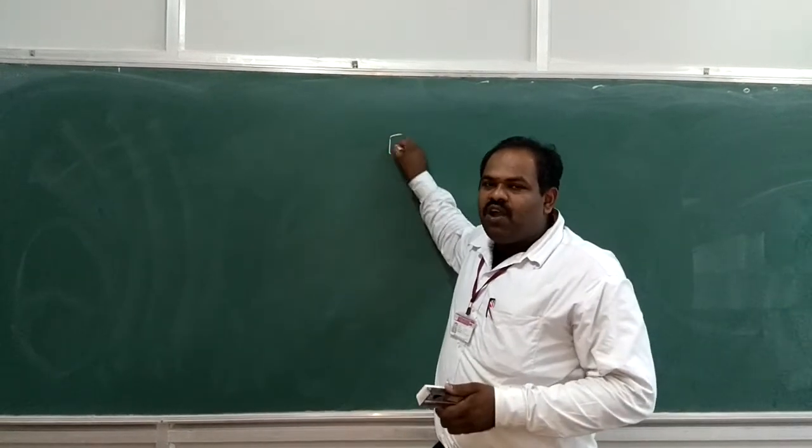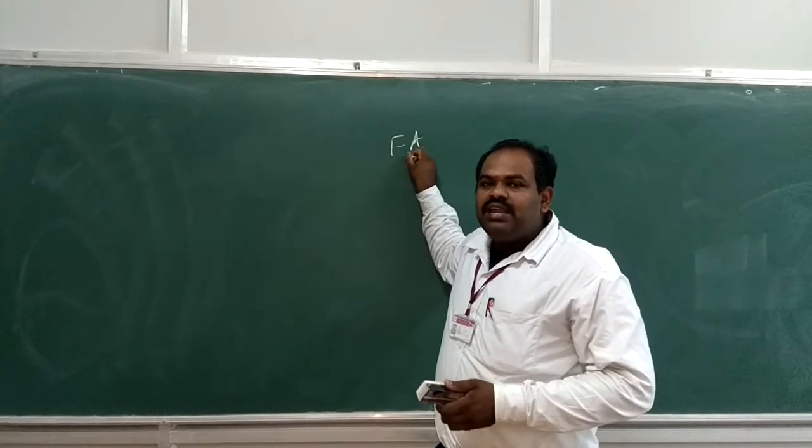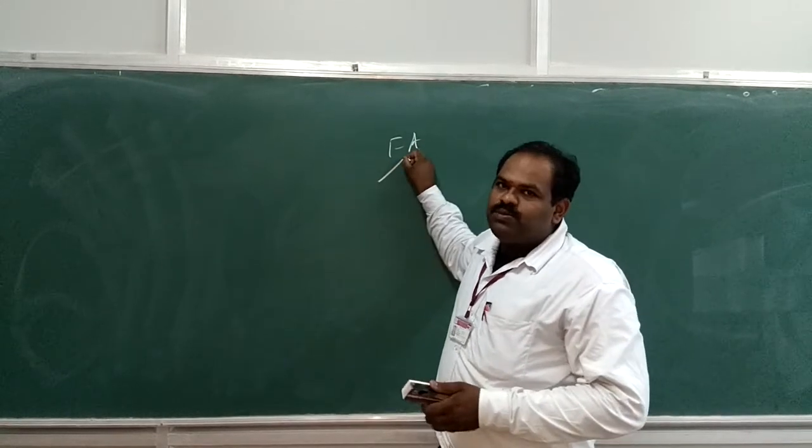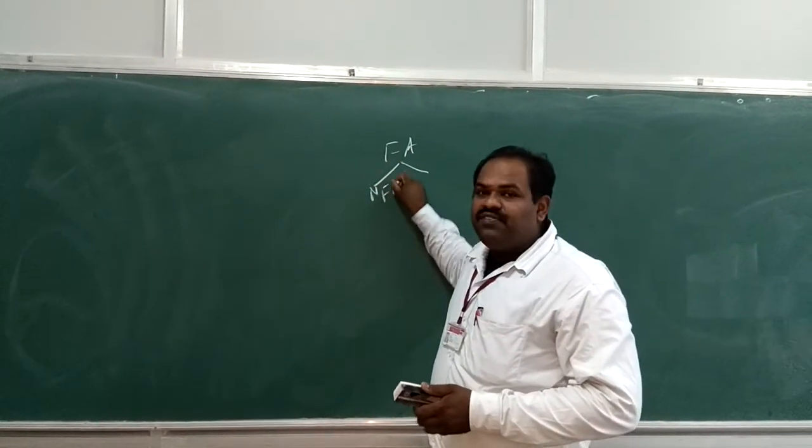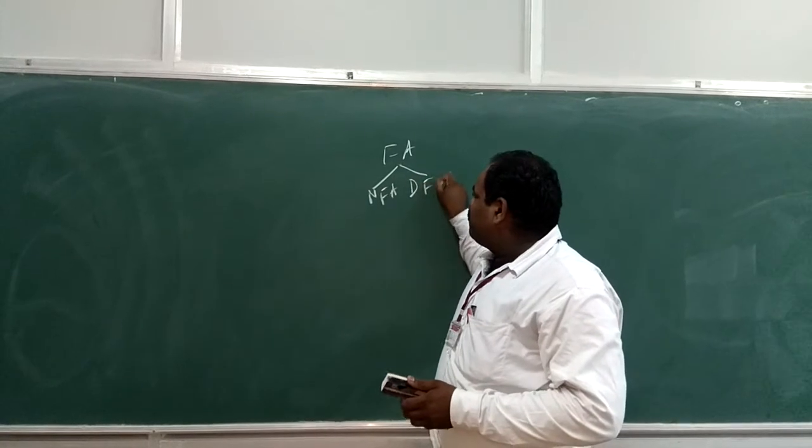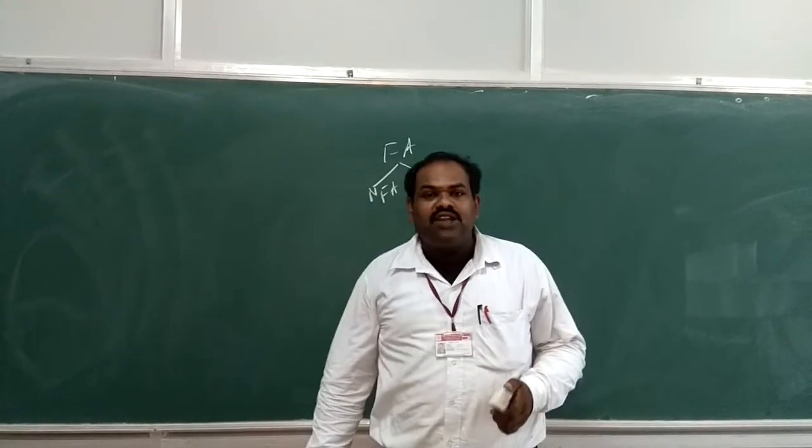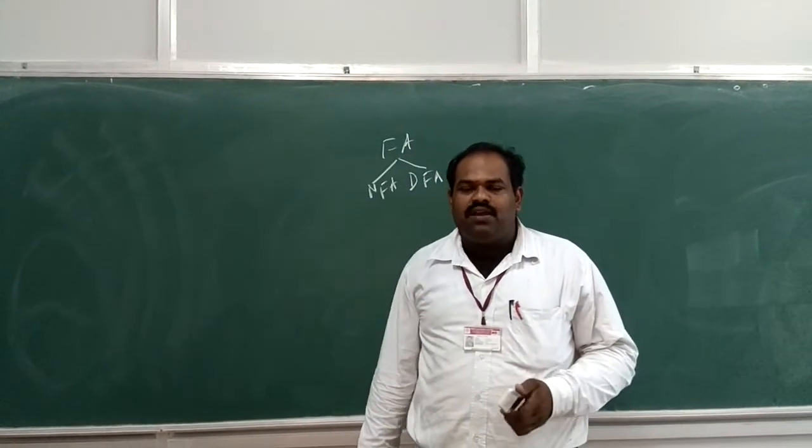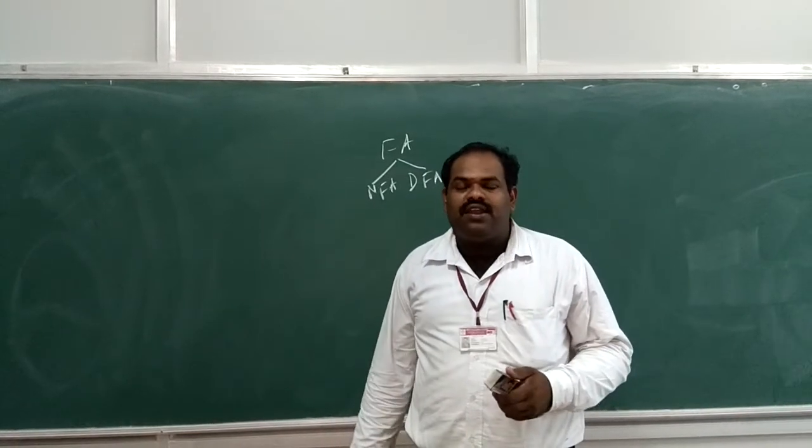This big name is called as FA, short name. It's further classified as two types. One is NFA, another one is DFA. What is NFA? NFA is a non-deterministic finite automaton. Then second one is DFA, deterministic finite automaton.